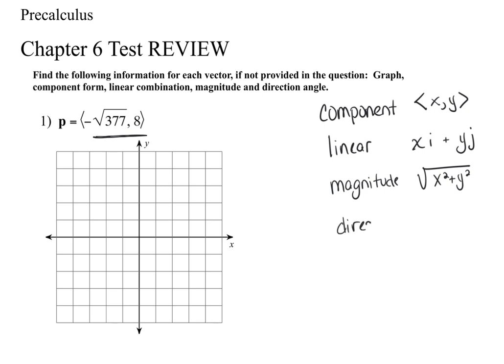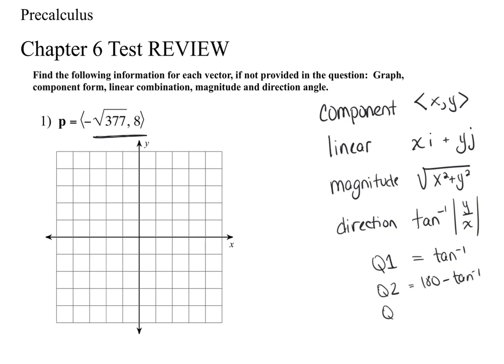Direction is the inverse tangent of Y over X, using absolute values — don't worry about positives and negatives or it'll give you a negative direction angle. The inverse tangent always gives you the reference angle, the quadrant one angle. You have to figure out which quadrant you're in: quadrant 1 — use the angle as-is; quadrant 2 — 180 minus the angle; quadrant 3 — 180 plus the angle; quadrant 4 — 360 minus the angle.